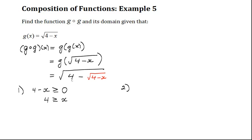For the second restriction, we have this whole square root here. So 4 minus the square root of 4 minus x has to also be greater than or equal to 0. So now we have to isolate for x. The first thing I'm going to do is bring this 4 to the other side of the inequality, and we get the following.